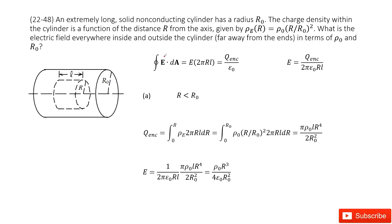We have an infinitely long non-solid, non-conducting cylinder object. The keyword non-conducting tells us the charge is uniformly distributed, with radius R0. The charge density within the cylinder is given as rho_e, and this rho_e changes with variable r.